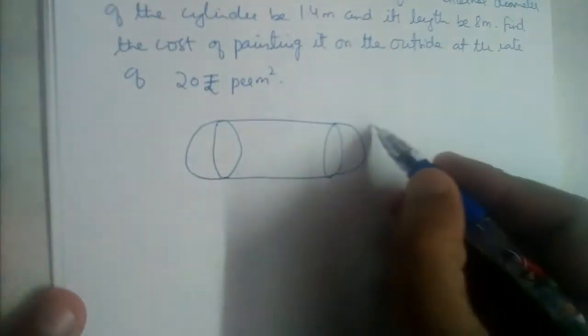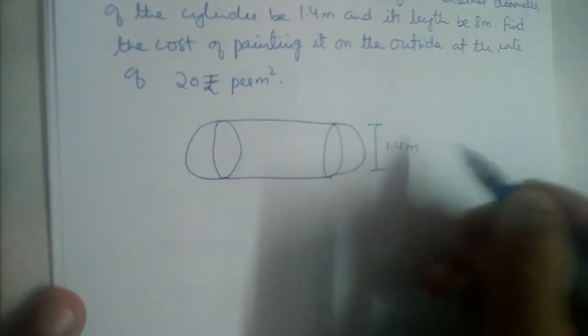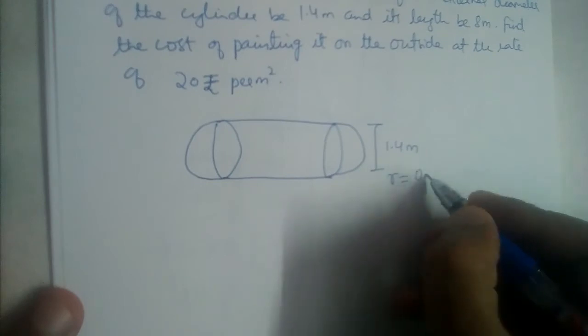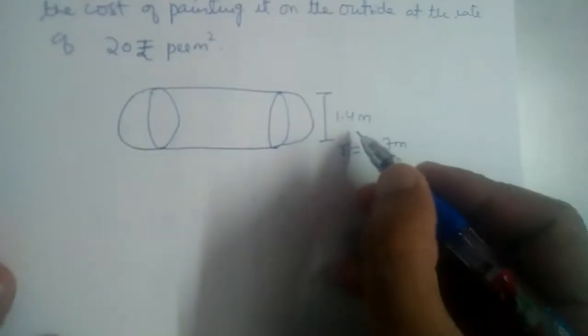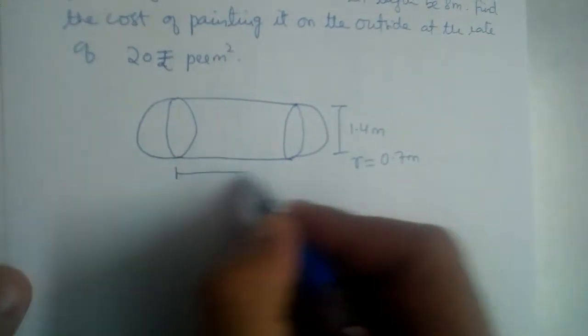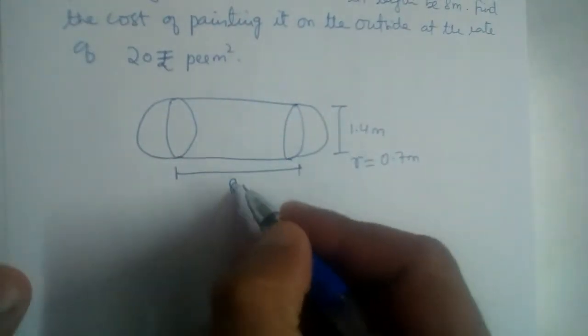If the diameter is 1.4, so if diameter is 1.4, radius will be equal to 0.7 meters, half of 1.4. And length of the cylinder is given as 8 meters.